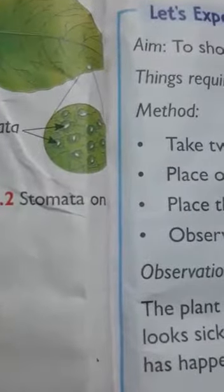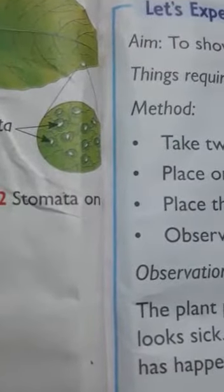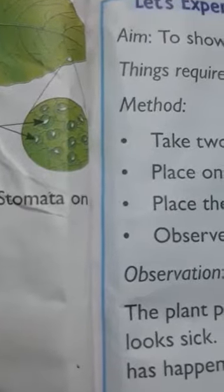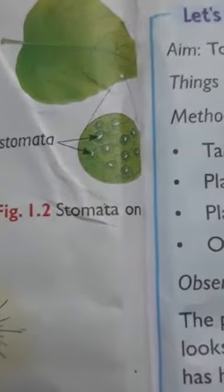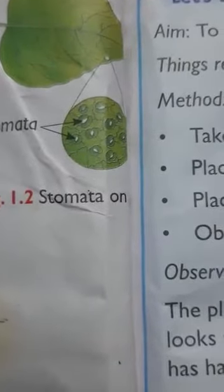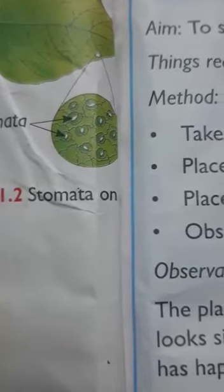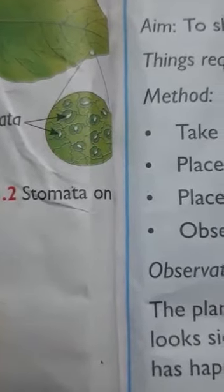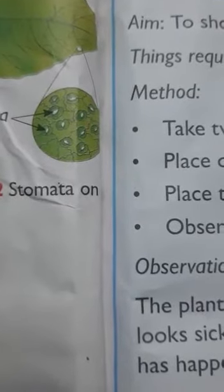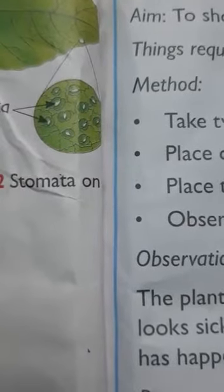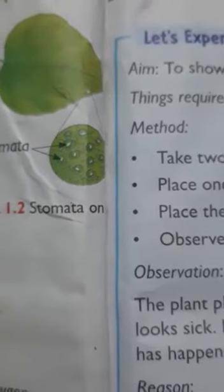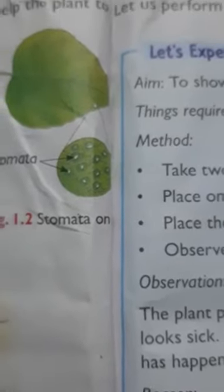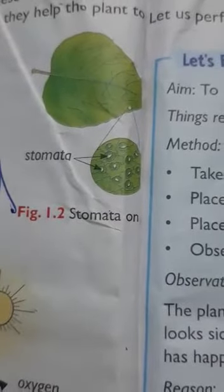If you observe a leaf using a magnifying lens, you will see tiny holes called stomata present on the surface of the leaf. These holes allow air to enter or leave the leaf, helping the plant to breathe.